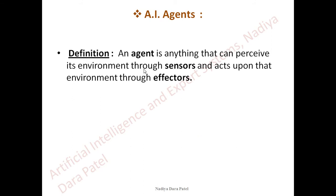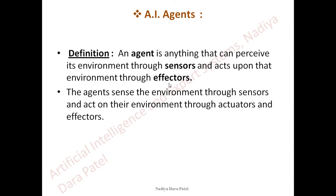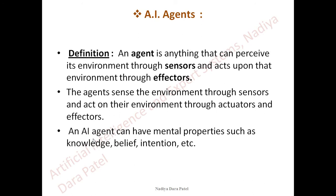The definition states that an agent — in our example, the child — is anything that can perceive, meaning learn or understand its environment through sensors, and act upon that environment through effectors. The agents sense their environment with the help of sensory organs, actuators, and effectors. An AI agent can also have mental properties such as knowledge, belief, and intention. In our case, the intention was to look at, feel, and study the flower.